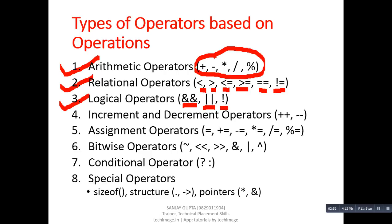The fourth one is increment or decrement operators. Here, we have only two symbols: plus-plus and minus-minus. These operators are used to increase the value of a variable by one or to decrease the value of a variable by one.